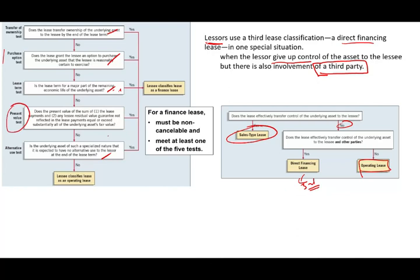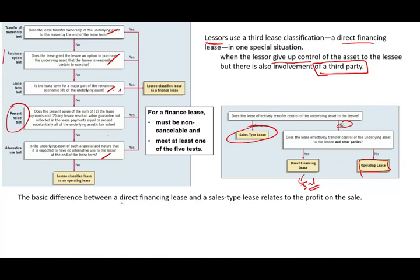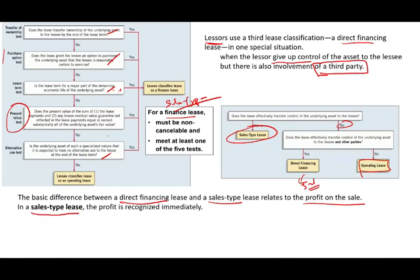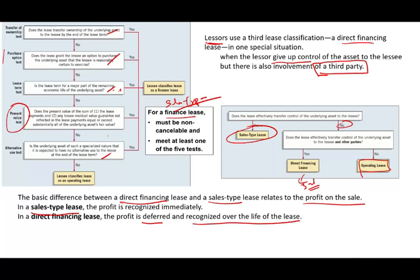So what happens is you are passing the present value test through the third party guarantee. The basic difference between a direct financing lease and a sales type lease relates to when we book the profit on the sale. In a sales type lease, we book the profit immediately when we make the journal entry. In a direct financing lease, the profit is deferred and recognized over the life of the lease — whatever profit we make from financing this transaction is taken over the life of the lease.